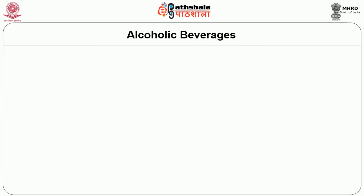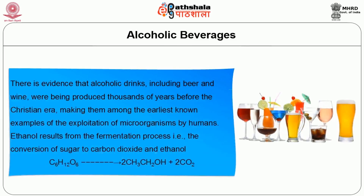First let us see about alcoholic beverages. There is evidence that alcoholic drinks including beer and wine were being produced thousands of years before the Christian era, making them among the earliest known examples of the exploitation of microorganisms by humans. Ethanol results from the fermentation process — the conversion of sugar to carbon dioxide and ethanol — that is, C6H12O6 is converted to CH3CH2OH and carbon dioxide.